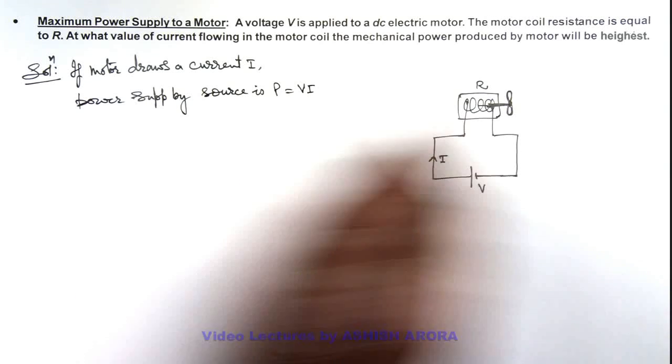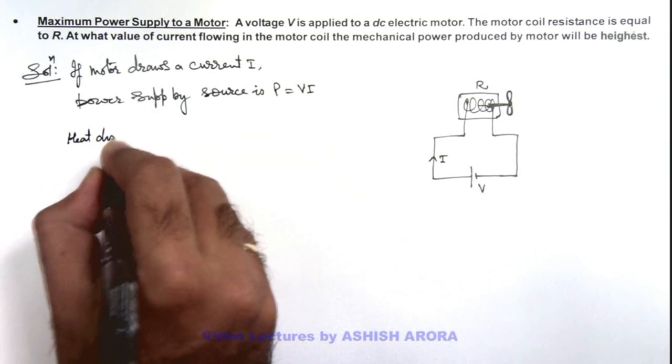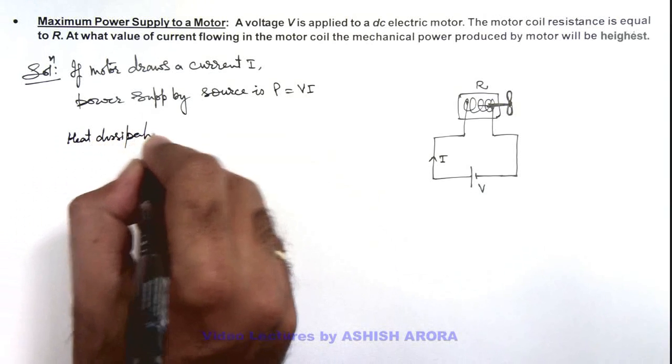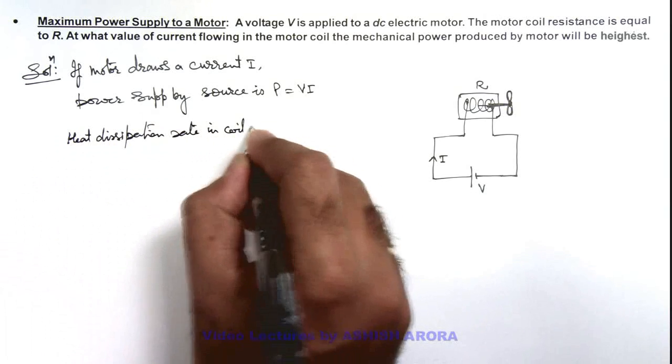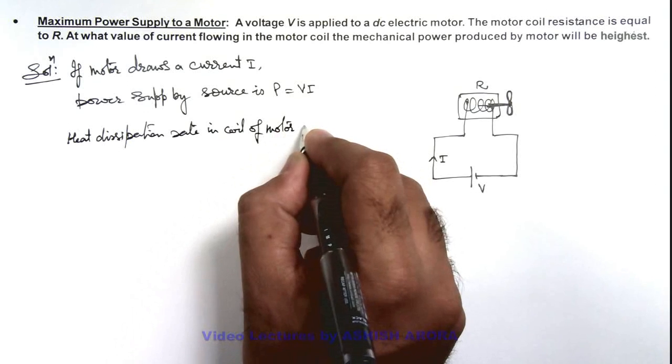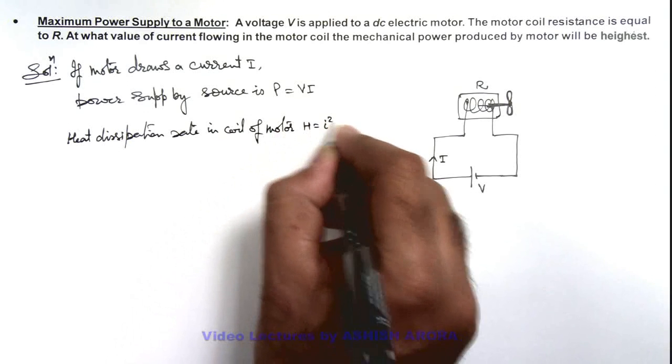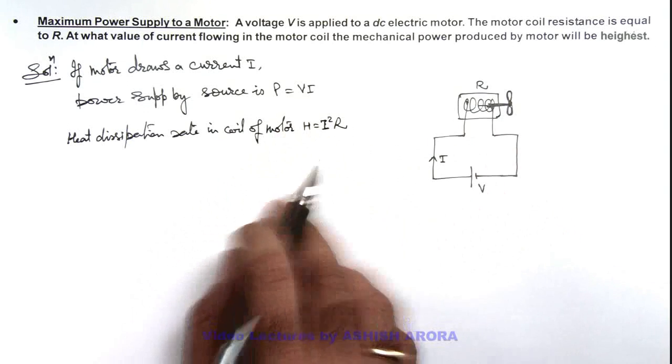In this situation we can calculate the heat dissipation rate in coil of motor. This can be written as H = I²R. This is the rate at which heat will be produced in the motor.